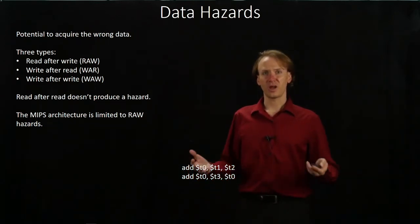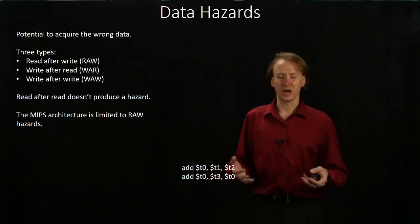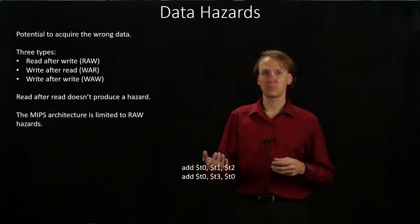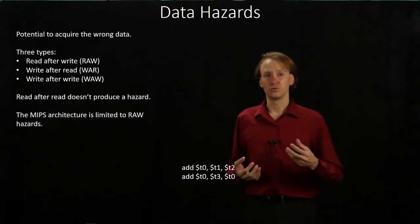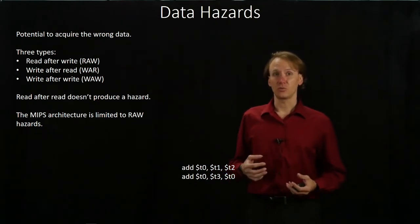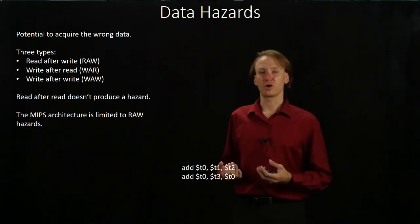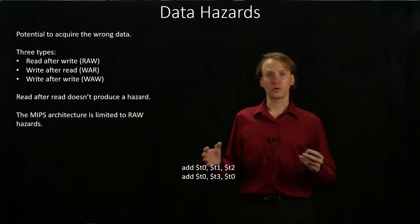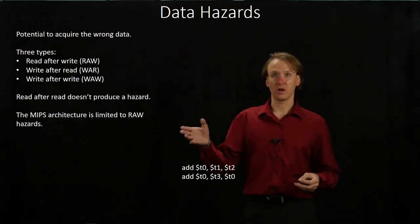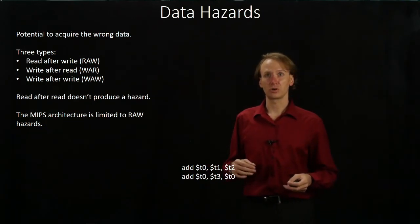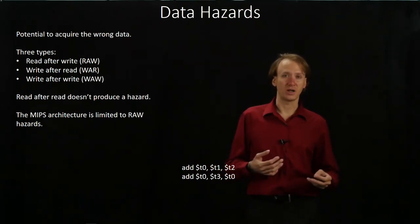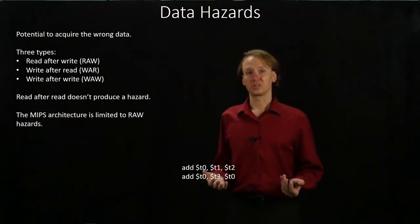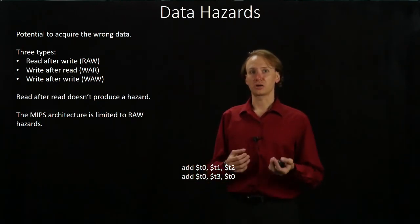The fourth type of hazard you could envision would be a read-after-read hazard, but those don't really exist because reading doesn't change the state of our system, so it doesn't really matter what order you do your reads in. What does matter is when you start having writes involved as well. Fortunately for our MIPS architecture, we only have to worry about RAW hazards — we won't have to worry about WAR or write-after-write hazards — but we will see how these can affect things later on when we start looking at even more complicated architectures.